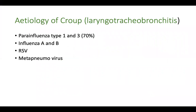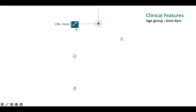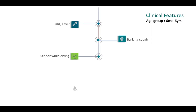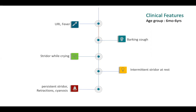The etiology of croup is mainly para-influenza virus, which accounts for 70% of cases. Influenza A and B, RSV, and metapneumoviruses are some other viruses which can cause croup. The clinical features usually start with simple manifestations like a running nose and upper respiratory infection with fever, and later progress to a barking cough. If severity increases, the child starts having stridor — initially when agitated or crying, then intermittent stridor followed by stridor at rest, severe retractions, and cyanosis.